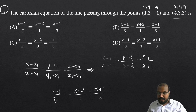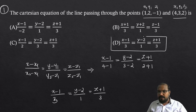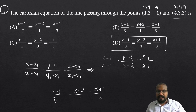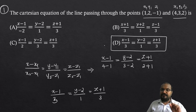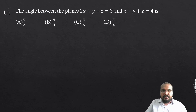x minus 1 by 3 equal to y minus 2 by 1 equal to z plus 1 by 3. Option D is the correct answer. This is the equation of a line passing through two given points.